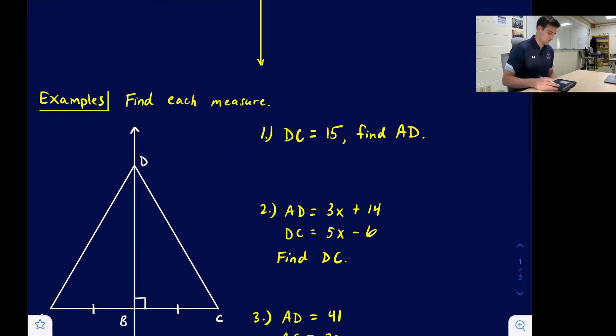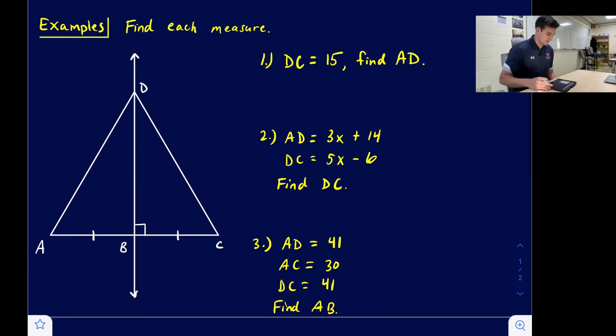So we can use this theorem to answer some questions. Here we go. We have this diagram here. It says find each measure. It says DC is 15, find AD. So if we put 15 right here, well, we just saw the example of this theorem, so we would know that AD is also 15. Nice, easy one there.